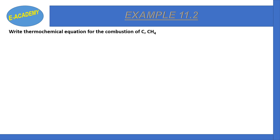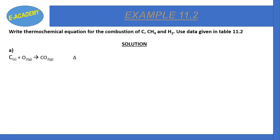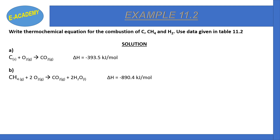Example 11.2: Write thermochemical equations for the combustion of C, CH₄, and H₂ using data given in table 11.2. The equation for combustion of carbon: C + O₂ → CO₂. Part B: H₂ + ½O₂ → H₂O, delta H = −285.8 kJ per mole. Part C: H₂ + ½O₂ → H₂O, delta H = −285.8 kJ per mole.